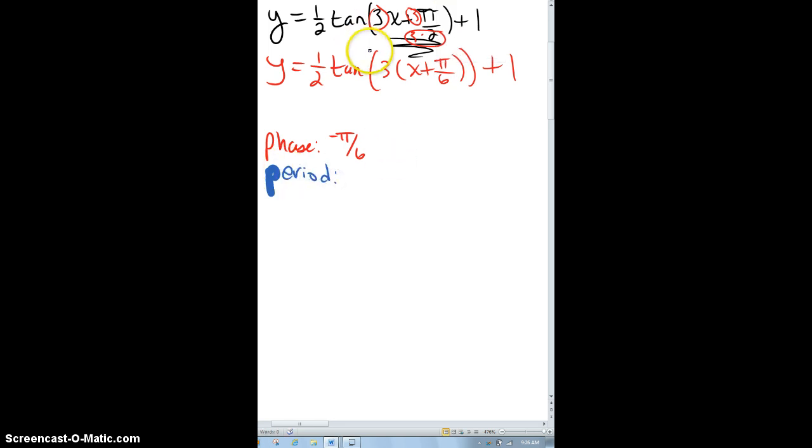The period is, again, with tangent, you have to remember the default is pi. It's not 2 pi. It's pi is normal, and again, you divide by the coefficient to get the period, so that's going to be my period.